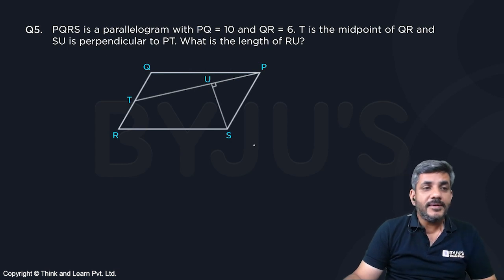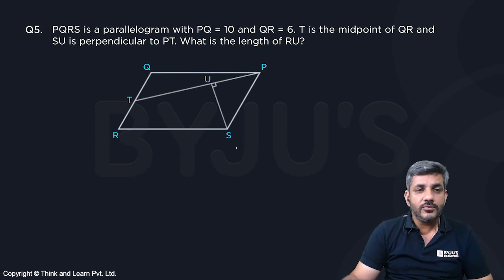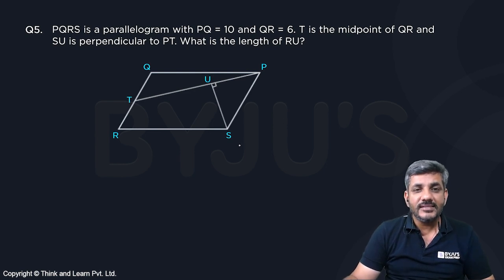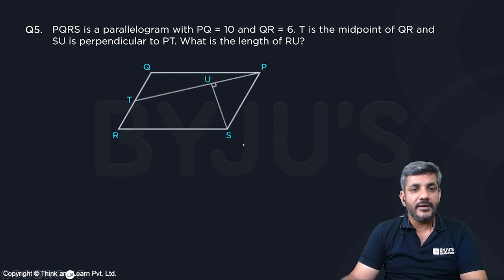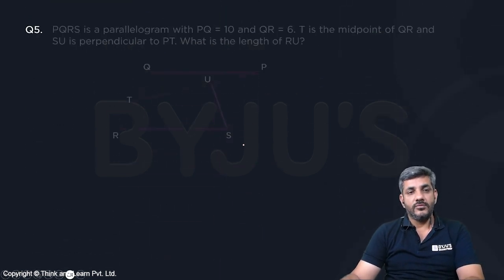Here we have a question of geometry. PQRS is a parallelogram with PQ equal to 10 and QR equal to 6. T is the midpoint of QR, and SU is perpendicular to PT. What is the length of RU?